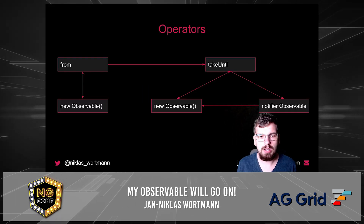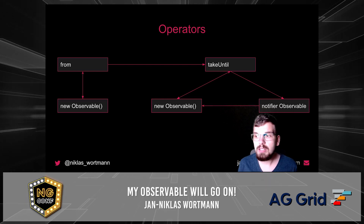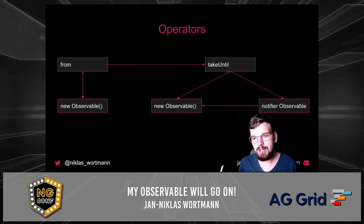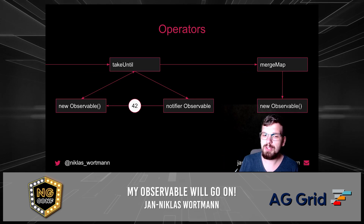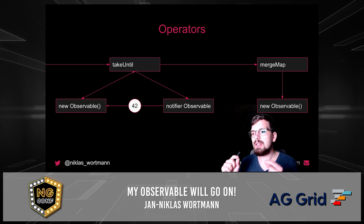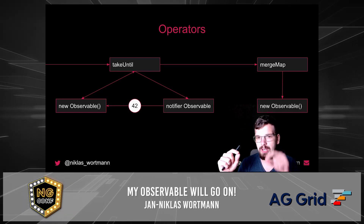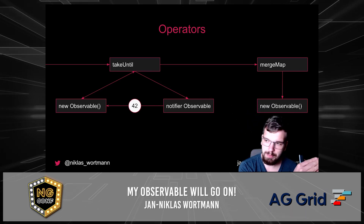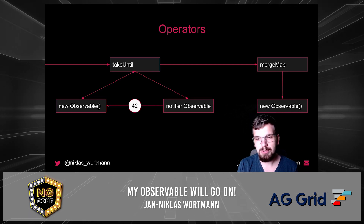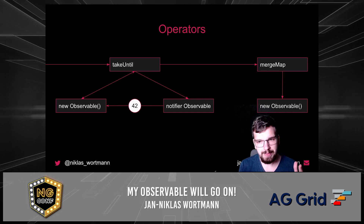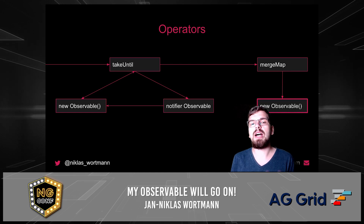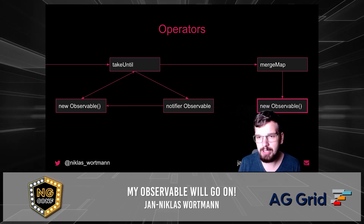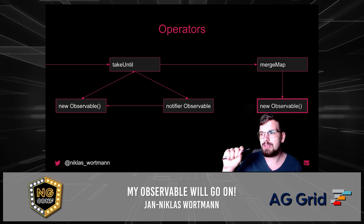Other than catchError, there's also the possibility that takeUntil might bite you. TakeUntil basically takes a notifier observable, and as soon as this notifier observable emits a notification, the source observable will complete. You still have to consider that even though you pass an observable into it, takeUntil will still wrap everything in an observable for you that you then subscribe on — this is there to pass through the next, error, and complete signals. We can be in a situation where we have operators after takeUntil, for example mergeMap. MergeMap takes a function that is called every time the source observable emits something, and this function returns a new observable that gets subscribed to.